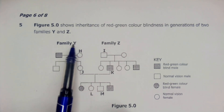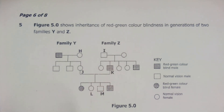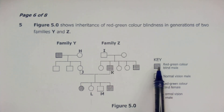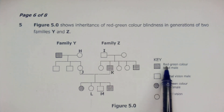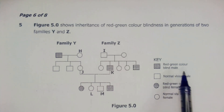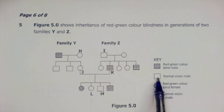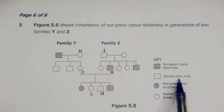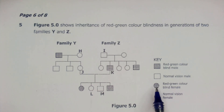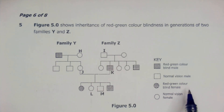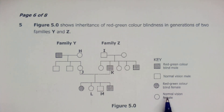So we have family Y and family Z. Here we have the key. The shaded square regions are showing a red-green color blind male, and the unshaded square is a normal vision male. The shaded circle represents a red-green color blind female, and the unshaded circle represents a normal vision female.